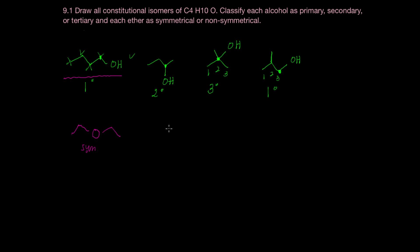We could also have three carbons coming off one way and one carbon coming off another way. So this is an asymmetrical ether.